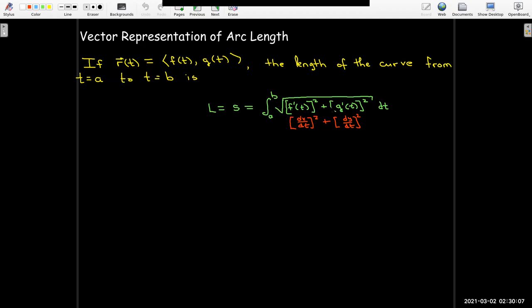But what is this expression inside the integral? Well, r prime of t would be just the vector with component functions f prime of t and g prime of t. So this expression is the length of r prime of t. So we have a very compact formula for the arc length in vector form.